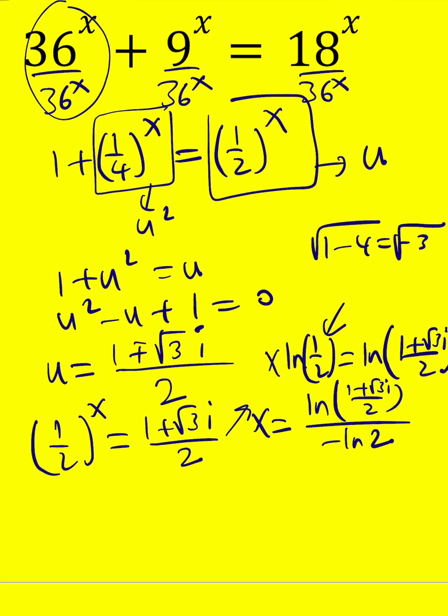And then we can leave it at that or find ln of this complex number. What is the ln of a complex number? Well, first you ln the modulus, which is the absolute value. Let me just tell you it's 1. So ln 1 would be 0. And then you do plus i times the argument.